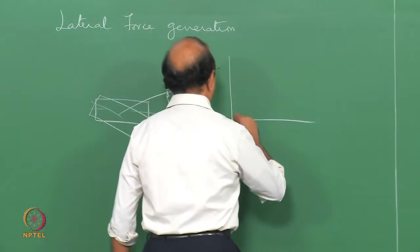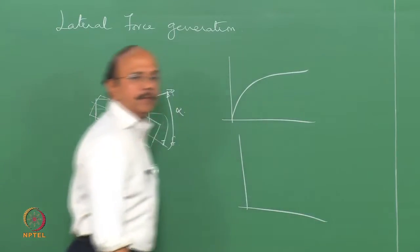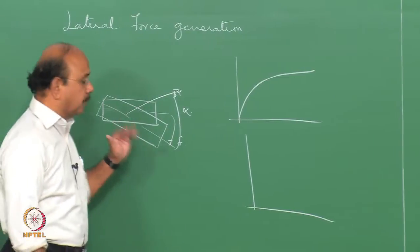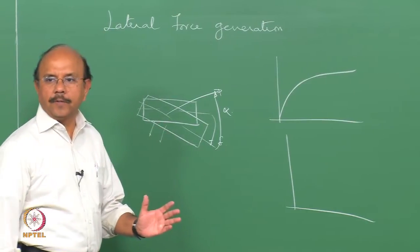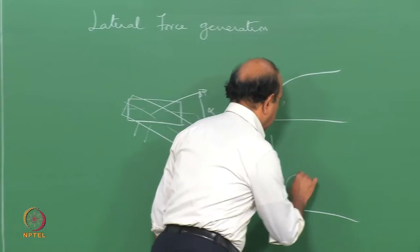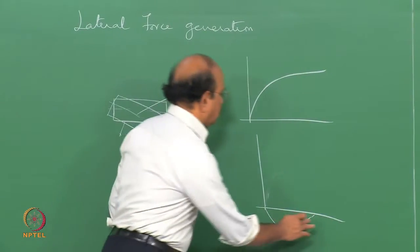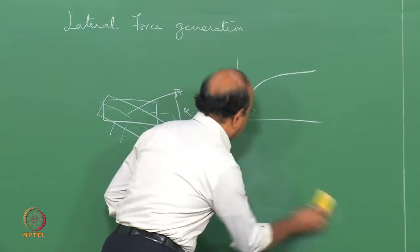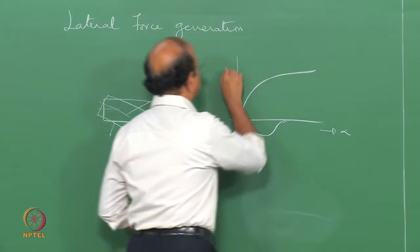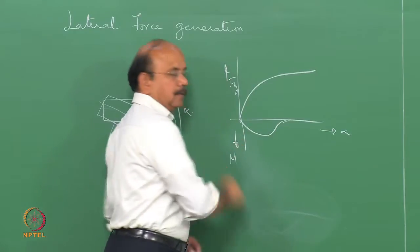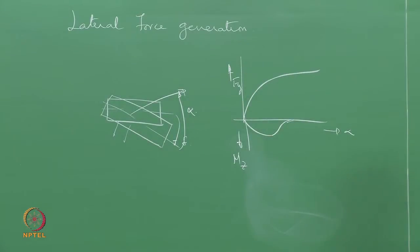At the end of last class, we obtained Fy and what is called the restoring moment. The restoring moment is due to the centripetal force not acting at the centre but at a distance called the pneumatic trail. We plotted a curve in the negative direction. This is Fy versus alpha, and that is Mz, which is the self-aligning torque.